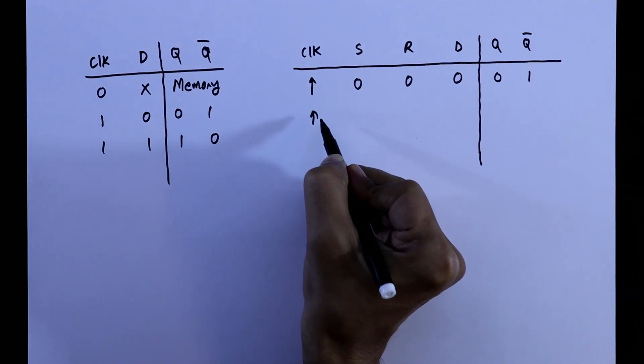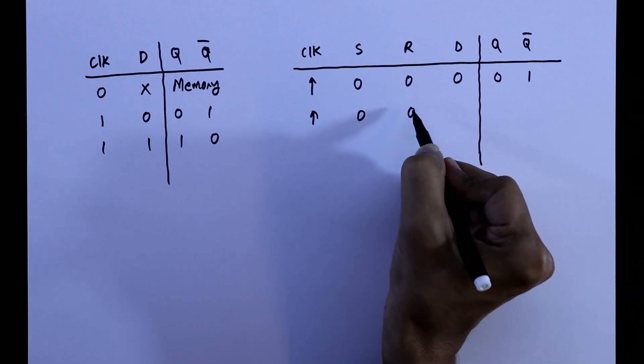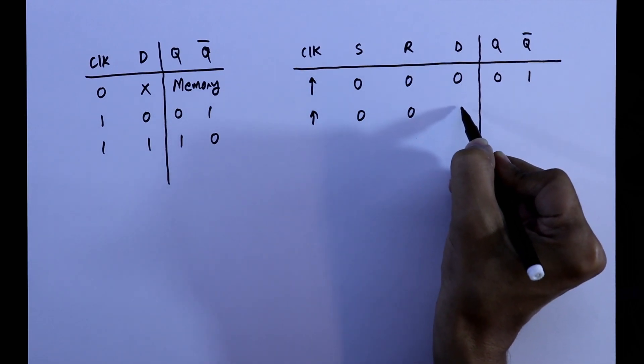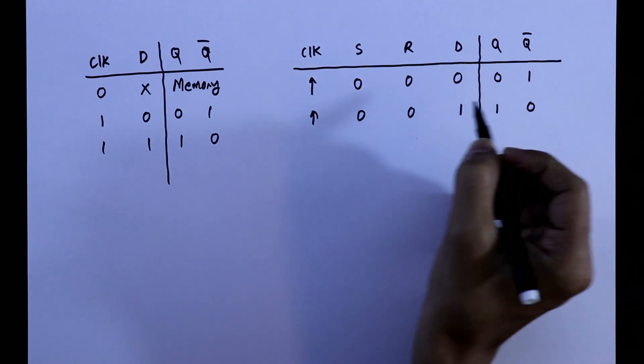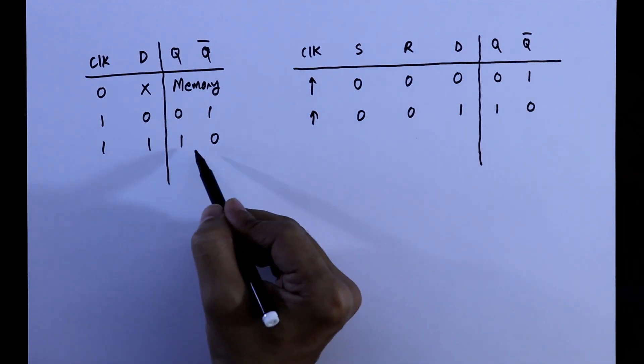When clock is 0 to 1, S 0, R 0 and if it is 1, then obviously it will be 1 and it will be 0. Again, it is same as this one.